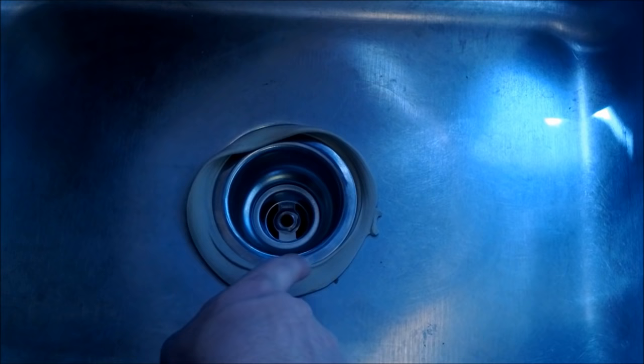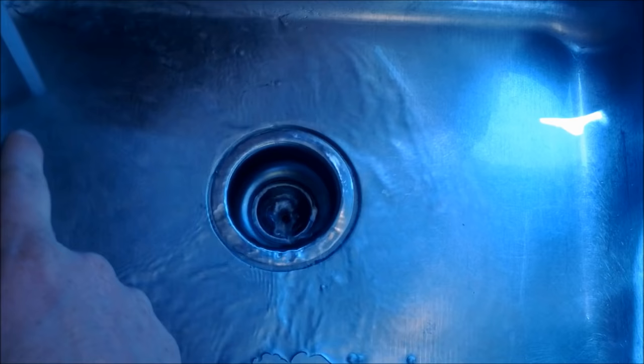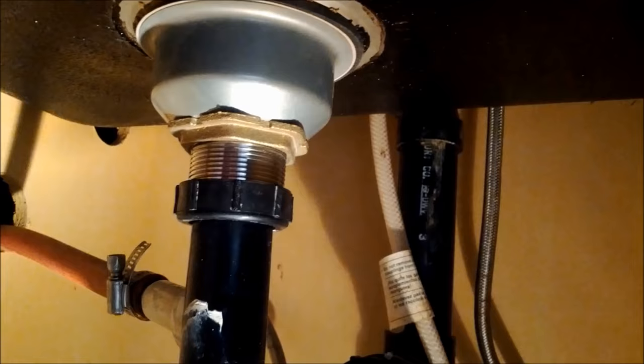Next, we'll come back up on top and remove the excess plumber's putty with our hand. Now that we removed the excess putty, we'll go ahead and turn the water on. We'll let it run so it goes all the way around the sink basket, and then we'll go underneath and check for any leaks.